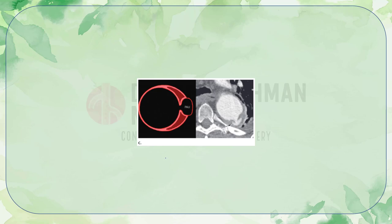The diagram shows how penetrating aortic ulcer presents — an ulcerated atheromatous plaque that penetrates into the aortic wall. On imaging, there is internal disruption with contrast within the medial layer of the aorta, with the preserved outer aortic wall, which distinguishes it from an aortic pseudoaneurysm.